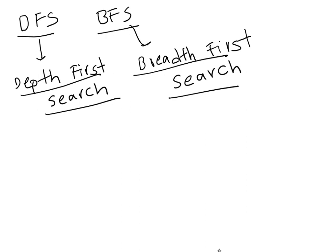Depth first search and breadth first search — I will draw the diagram and try to explain both. Simply remember: depth means vertical line and breadth means horizontal line. Let me draw a tree to explain.